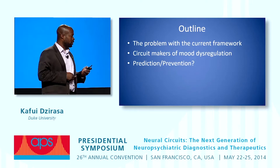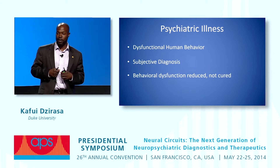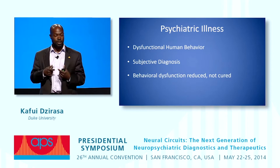Neuropsychiatric illness in its simplest form is based on dysfunctional human behavior. These disorders are based on subjective categories of symptoms. As a result of our lack of knowledge of the underlying biology, most of our treatments focus on reducing symptoms and not really focusing on cures.